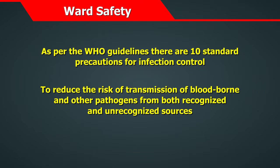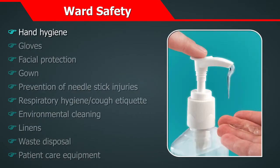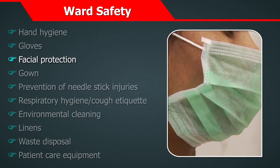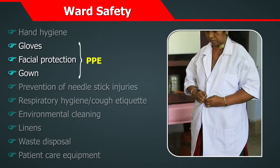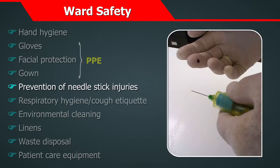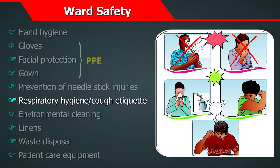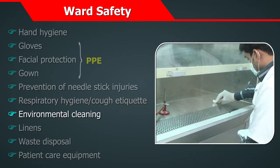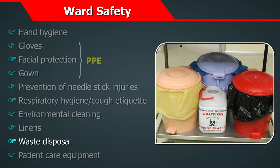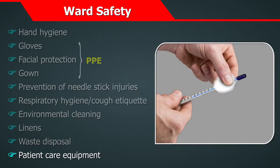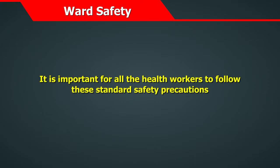These precautions are meant to reduce the risk of transmission of blood, bone and other pathogens from both recognised and unrecognised sources. These include hand hygiene, gloves, facial protection, and gown — all three coming under personal protective equipment — prevention of needle stick injuries, respiratory hygiene and cough etiquettes, environmental cleaning, linens, waste disposal, and patient care equipment. It is important for all health workers to follow these standard safety precautions.